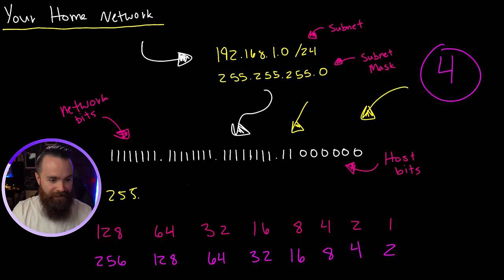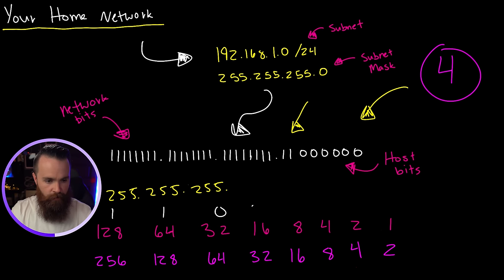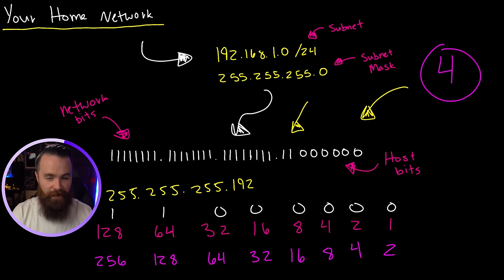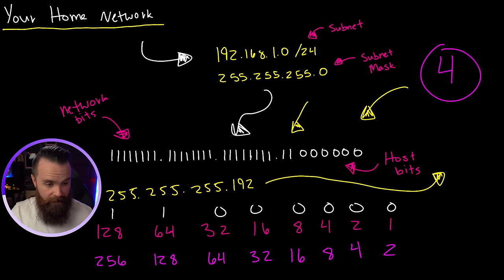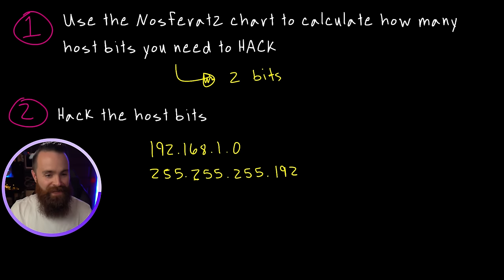We're not quite done yet — our mask is still in binary. Let's use Nosferatu to convert our mask back into decimal. We know that all ones are 255, because all bits are on. And in our fourth octet, we can see that the first two bits are on and the rest are off. If we add 128 to 64, what do we get? 192. That's our new mask. And if we write that in slash notation — simply counting all the network bits — we get 8, 16, 24, 25, 26. We have a slash 26 network.